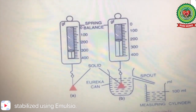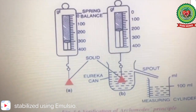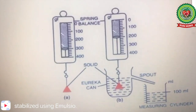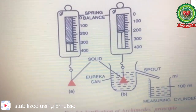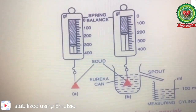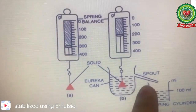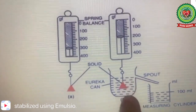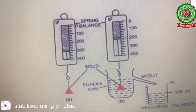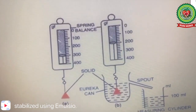Let us discuss one more experiment — this one is very simple. We consider a solid metallic piece and measure its weight using a spring balance in air. Then we consider a Eureka can, which has a spout through which water can flow out. We fill the Eureka can with liquid and dip the solid into it, then measure its weight again.